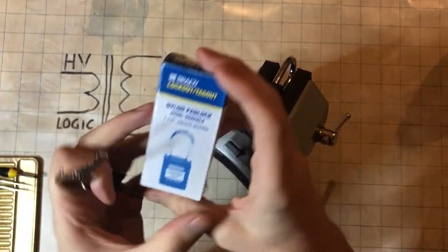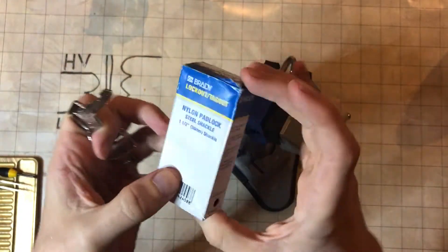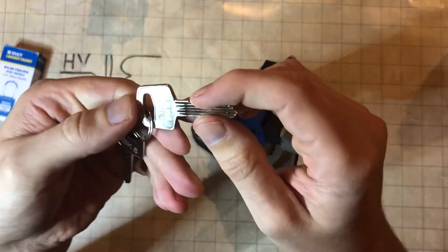Alright, so we're going to be picking this Brady locker lotto lock. It's got an Abus keyway in it.